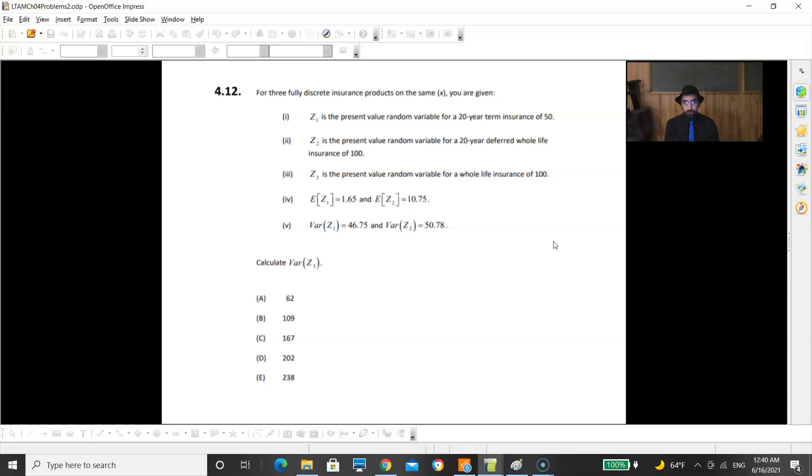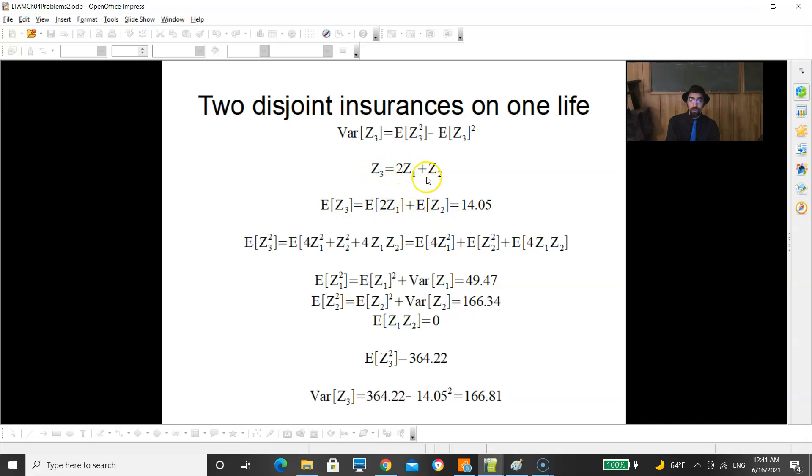For the next one, for three fully discrete insurance products on the same life X, Z1 is the present value of a 20-year term insurance of 50, Z2 is the present value of a 20-year deferred insurance of 100, and Z3 is the present value of a 20-year term variable for a 20-year term insurance of 100. They give you E of Z1 and E of Z2, and var Z1 and var Z2, and you need var Z3. Same idea. In this case, you point out that Z3 is 2 of Z1 plus 1 of Z2. If you frank insurance these together, 2 of this and 1 of that, you'll get the whole life insurance.